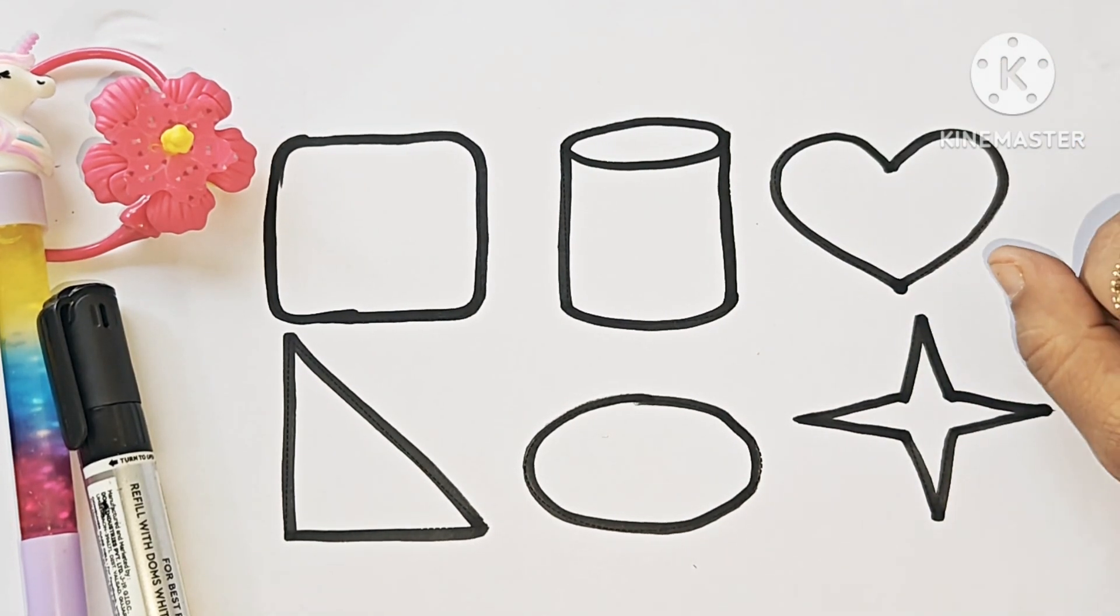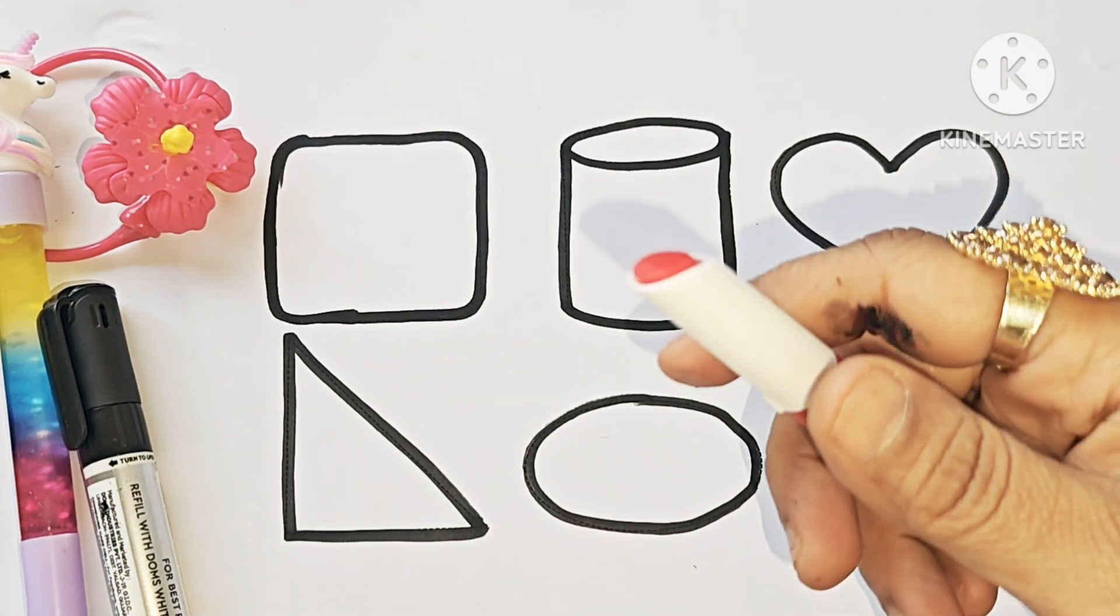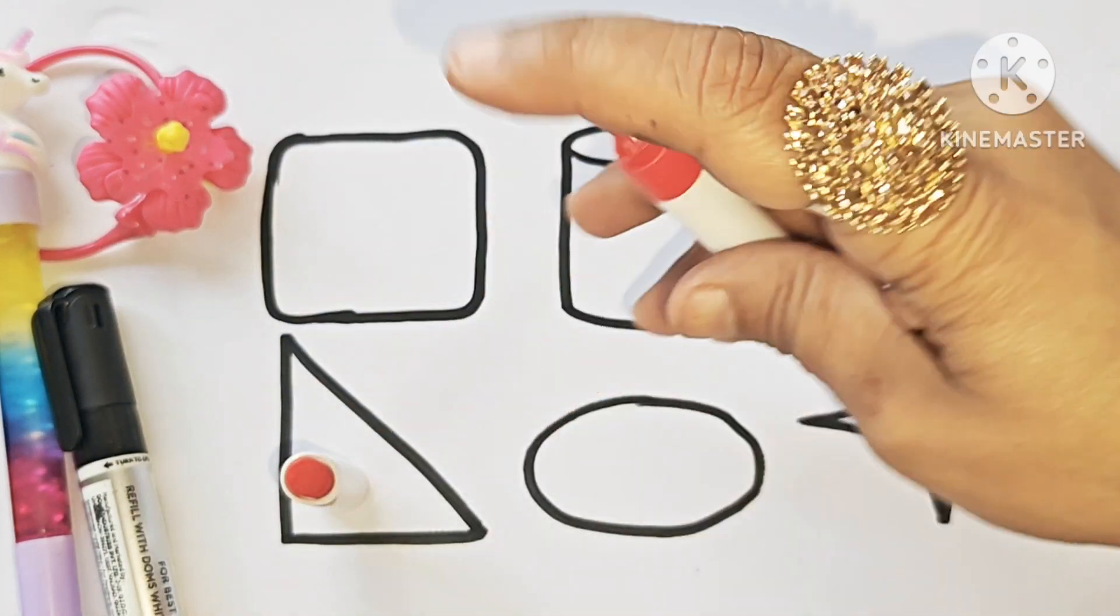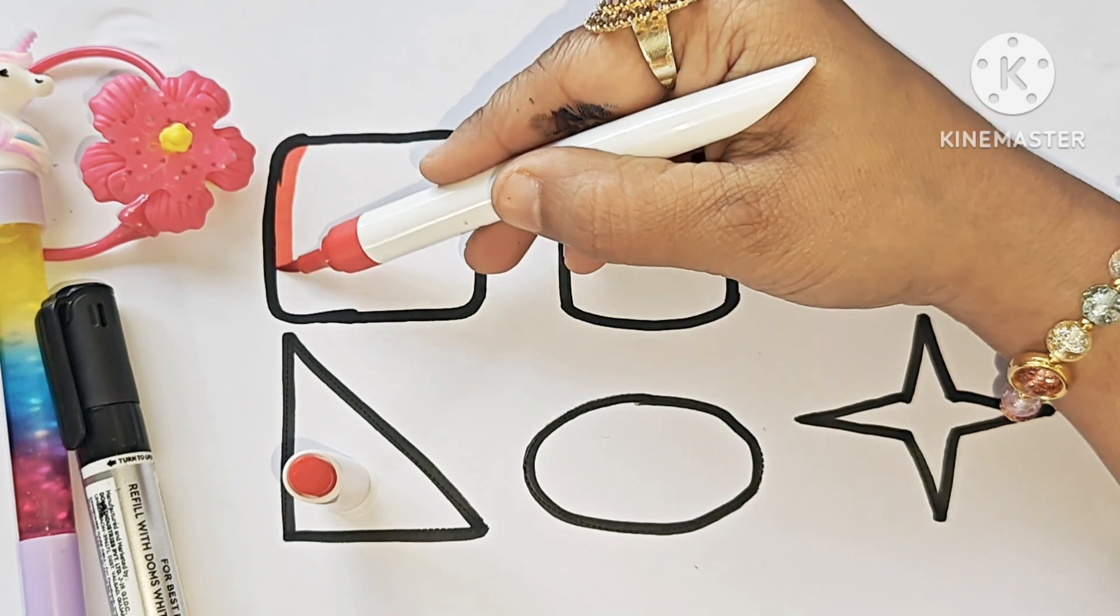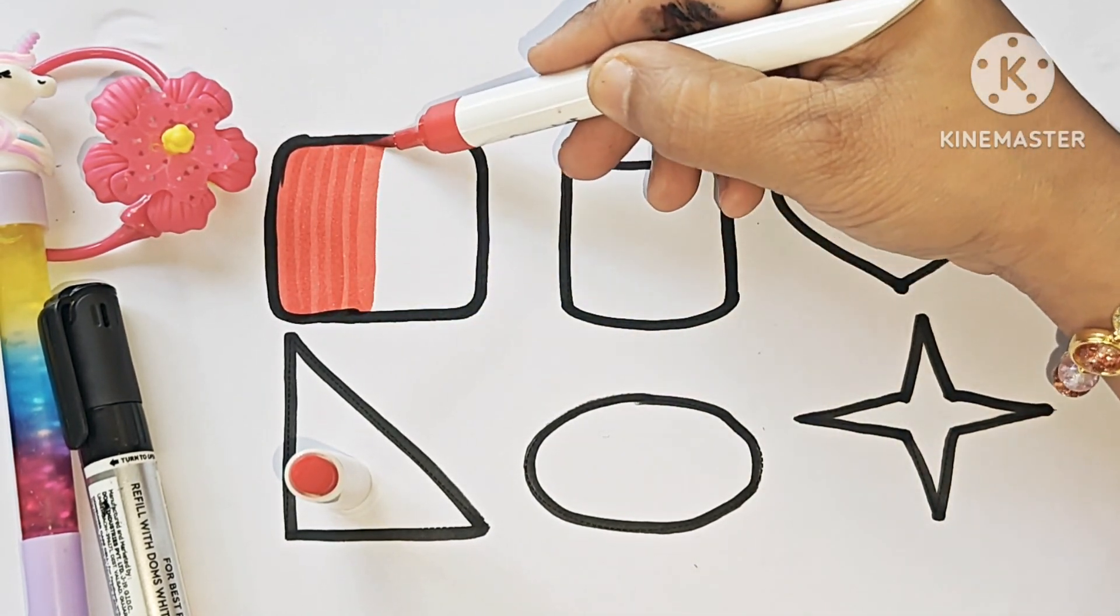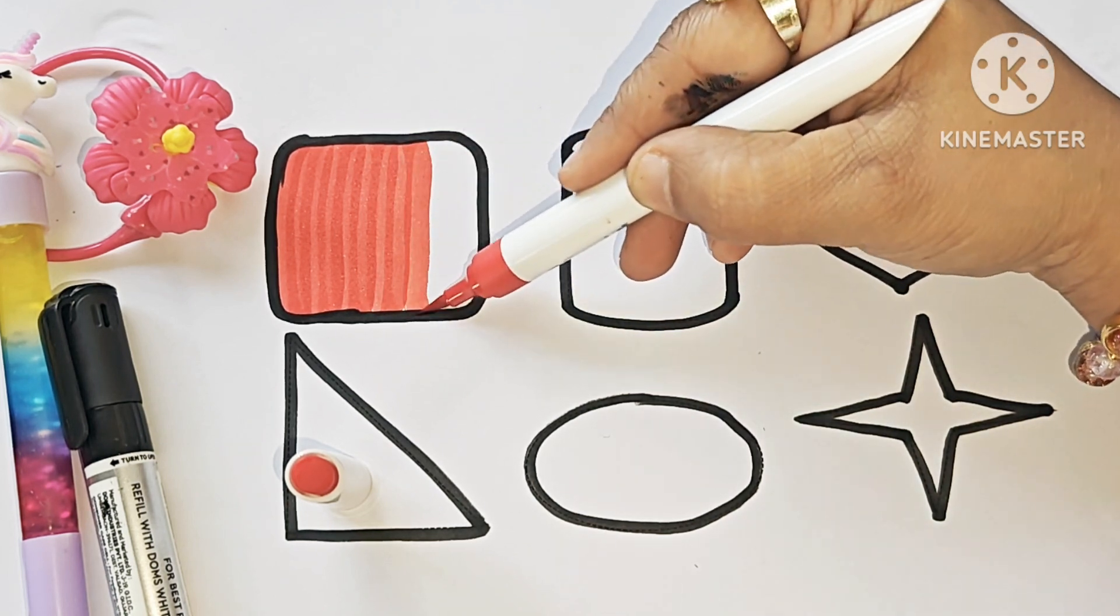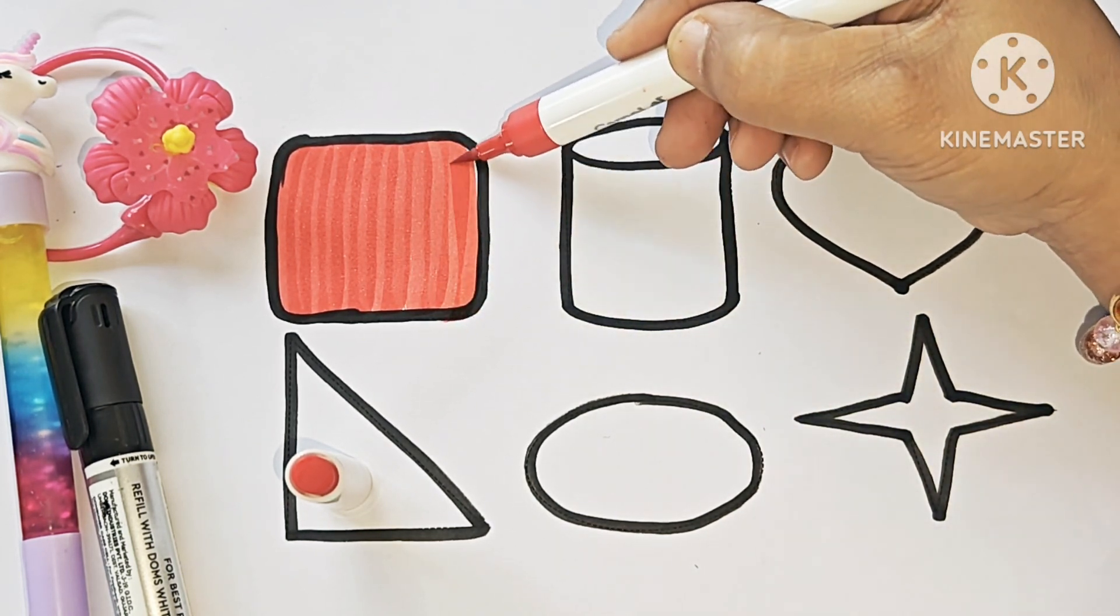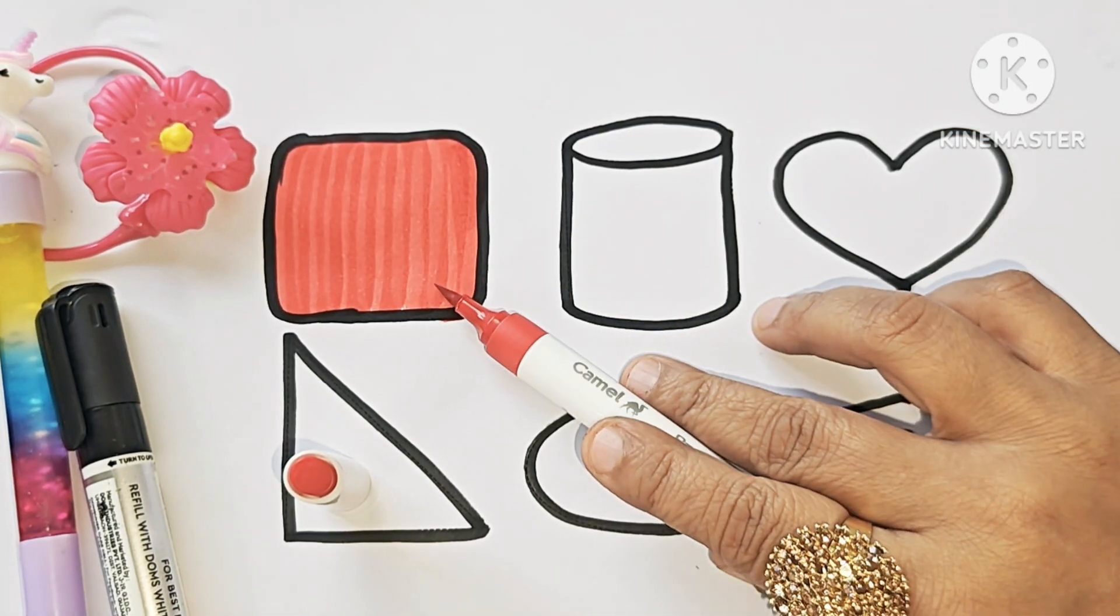Let us color these shapes. This is red color. It is a rounded square.